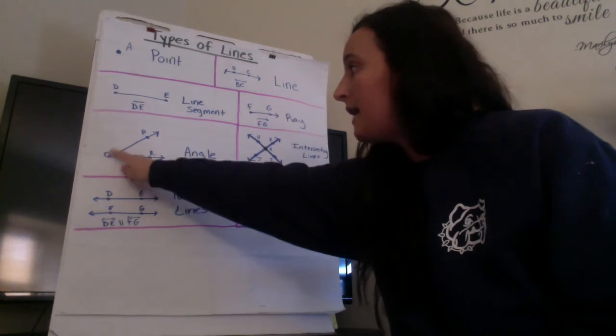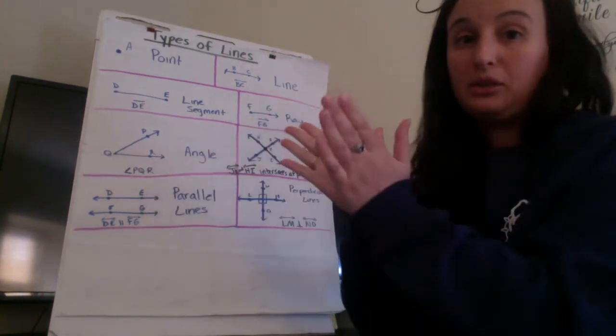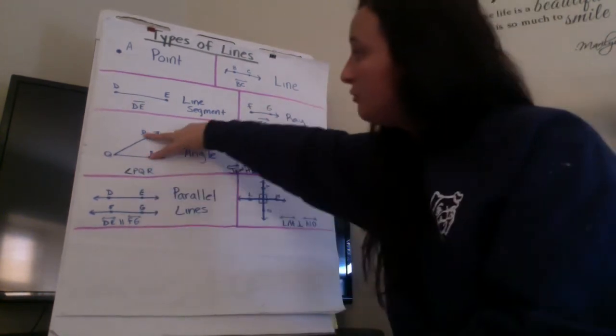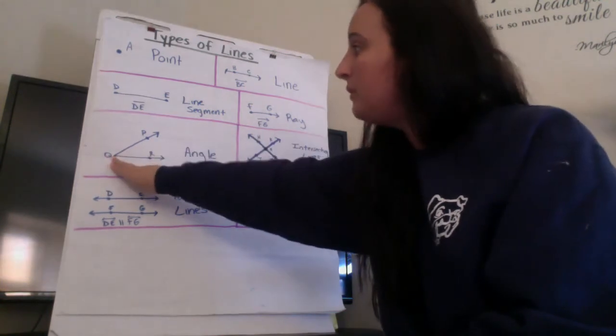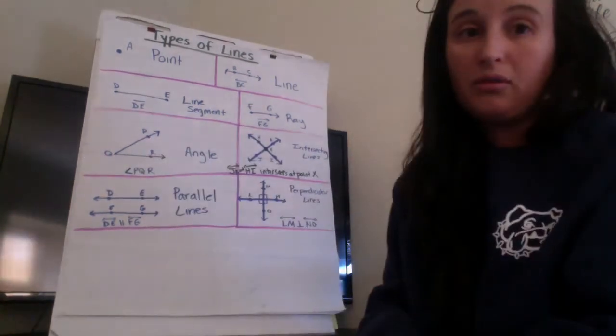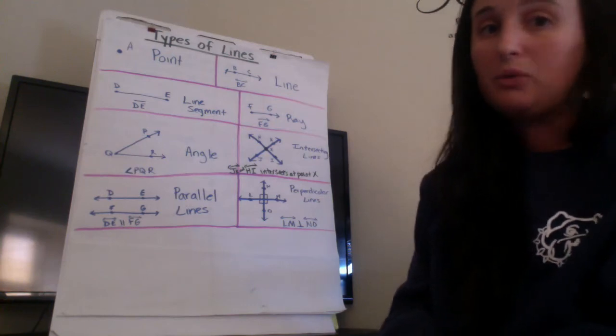The vertex of an angle is that middle point where the two essentially rays meet. These two rays are meeting at point Q making this angle PQR so I would name that PQR.